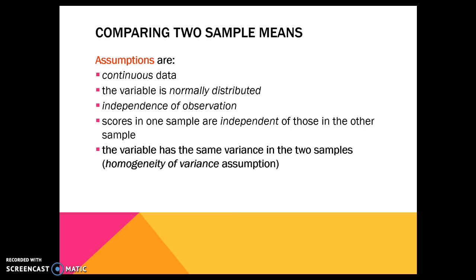The samples should be completely different tests. And then there's a new assumption called homogeneity of variance. This has to do with the two samples having pretty similar variance. That means the girls' group isn't spread more widely around the mean than the boys' group — the spread, the variance around that mean, should be pretty similar throughout.